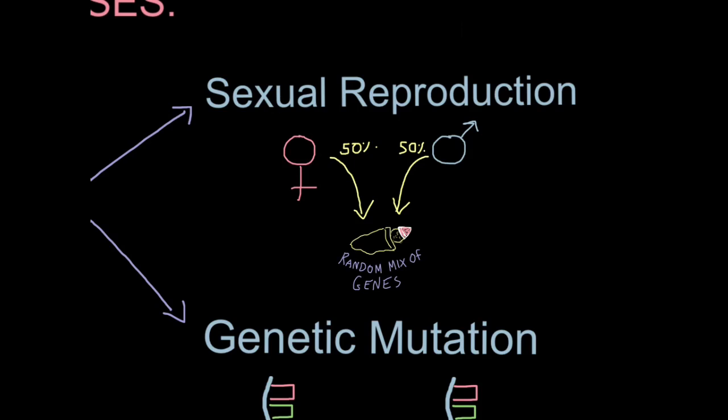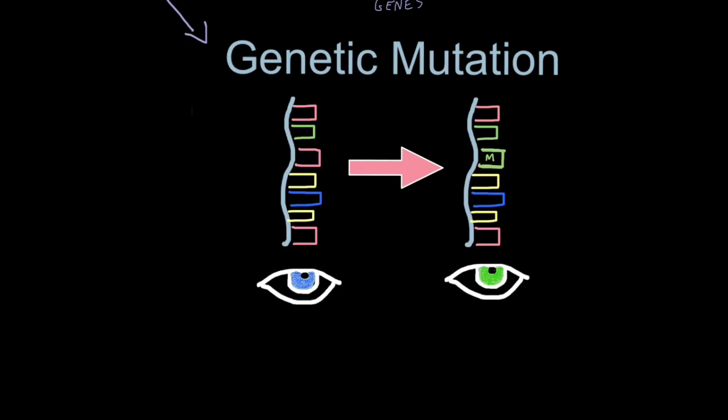So a baby will inherit 50% of its genes from its mother, and 50% of its genes from its father. Because they will inherit characteristics randomly from the mother and the father, that will explain why you seldom look like your brothers and sisters. The main point here is sexual reproduction is a major source of variation.